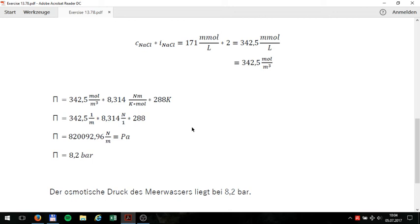In the next step, the moles and Kelvin shorten themselves mutually away, so that we get now for p 342.5 per cubic meter multiplied by 8.314 Nm divided by 1 multiplied by 288.